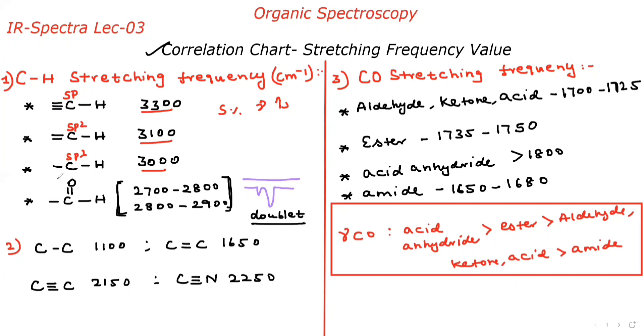In case of aldehyde C-H group, they always form a doublet. What is doublet? See here, one line and another line - this is doublet. They always show the doublet signal in the IR spectra. What is the value? 2700 to 2800 and 2800 to 2900. This is always for the aldehyde C-H group showing doublet in the IR spectra. This aldehyde C-H group is very important, please note.